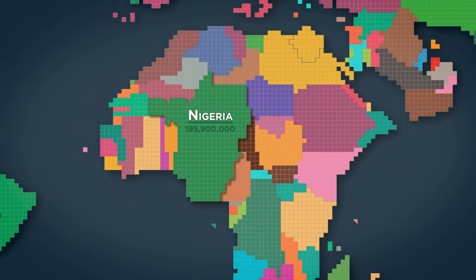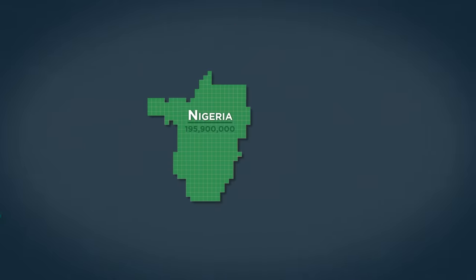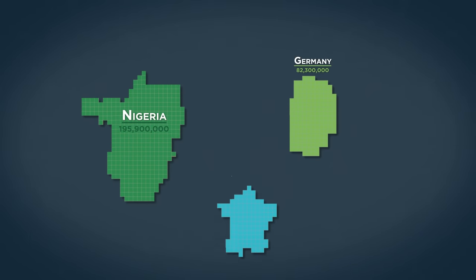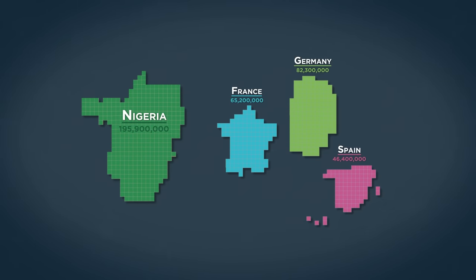Nigeria. Nigeria's population has ballooned to 196 million people today, making it by far the most populous state of Africa. Nigeria's population is larger than Germany, France, and Spain all combined. And it's projected that by the end of the 21st century, Nigeria will overcome Brazil, Pakistan, Indonesia, and even the United States to become the world's third most populous country.